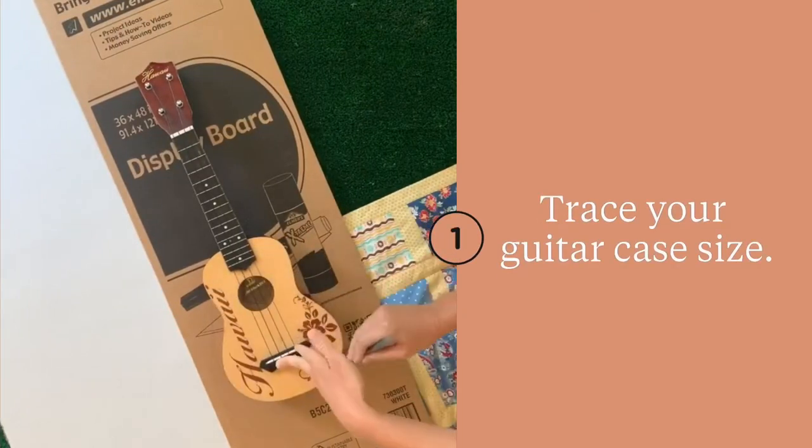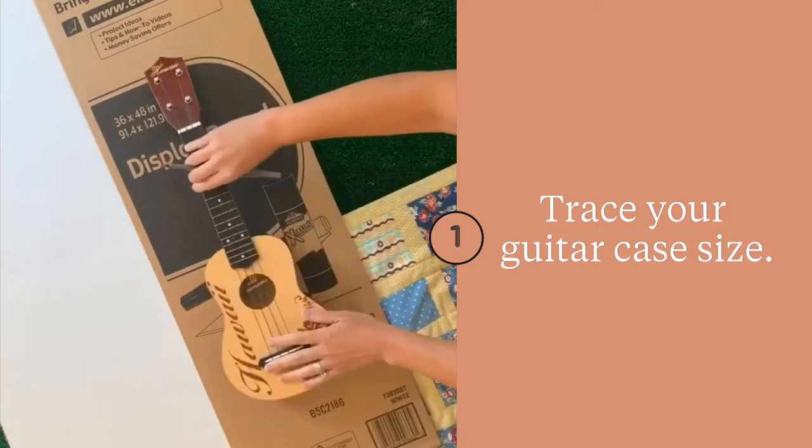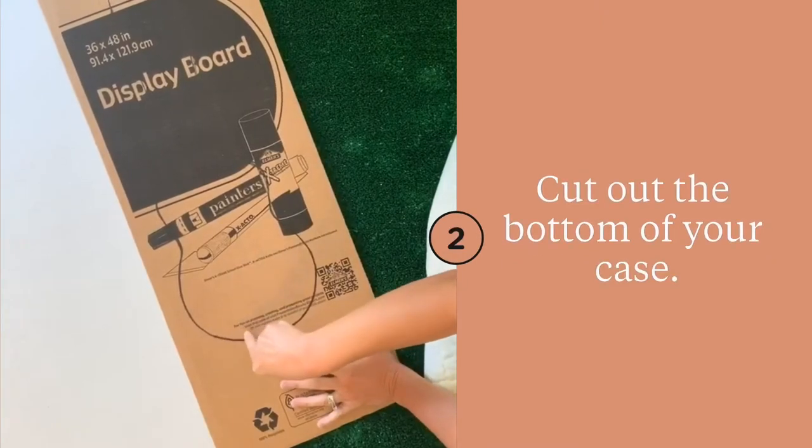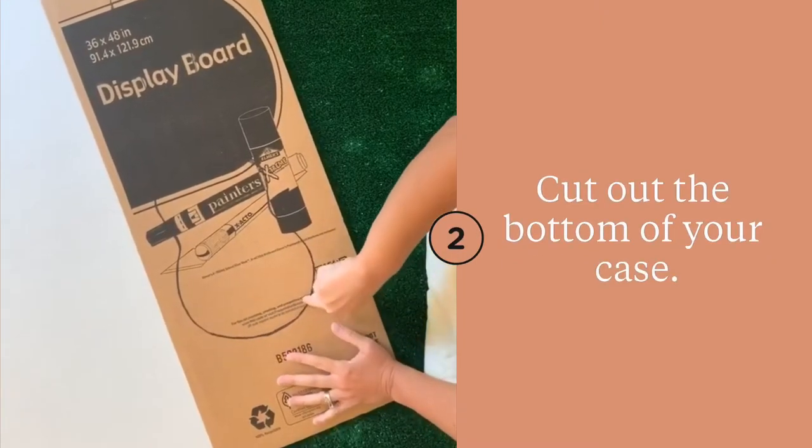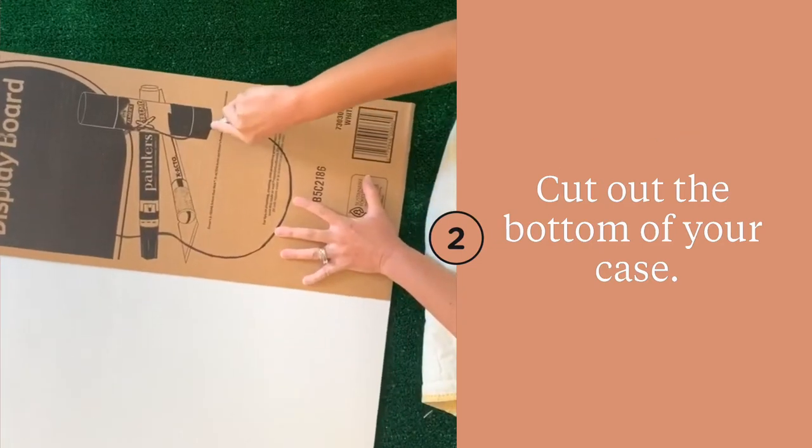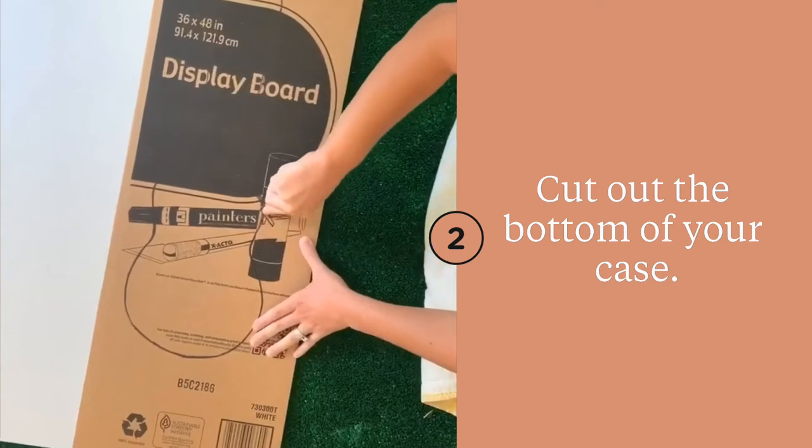Start by tracing your guitar case. I used a ukulele for the adult size case as a reference. Once you have your guitar shape all traced, you're going to use an exacto knife to cut it out. Just start by cutting out one of the shapes so that you can use it as a reference to trace your second shape in the next step.